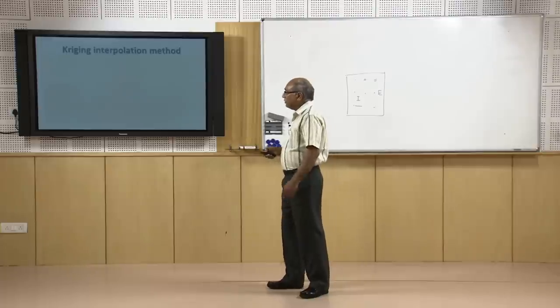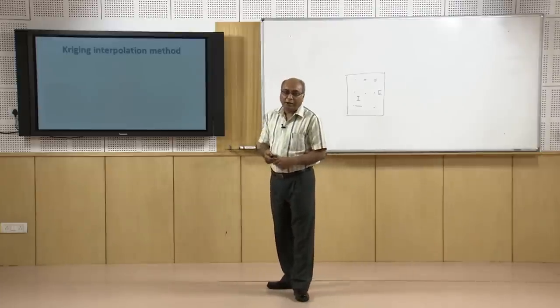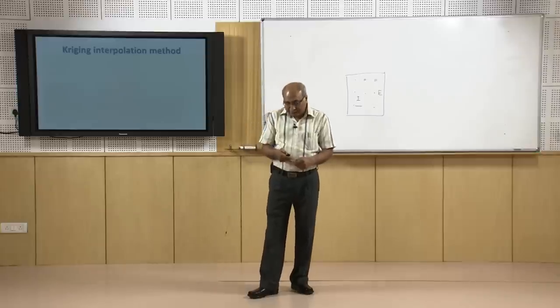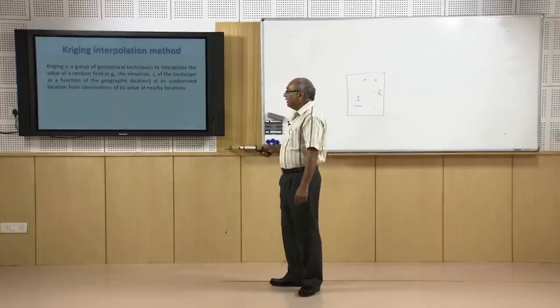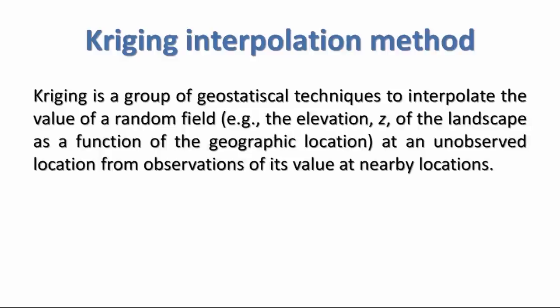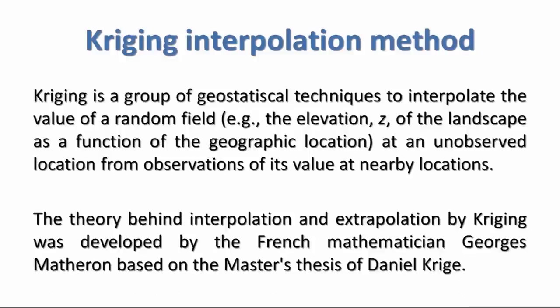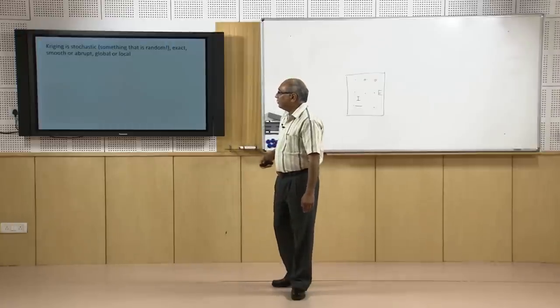The last interpolation technique, very popular and implemented in standard GIS softwares, is the Kriging method. Kriging is a group of geostatistical techniques to interpolate values of a random field — such as elevation Z value of a landscape — as a function of geographic location, at an unobserved location from nearby observed values. It was developed by French mathematician Georges Matheron based on the master thesis of Daniel Krige, whose name it carries.